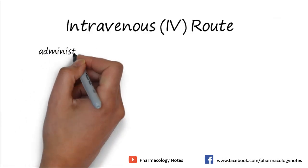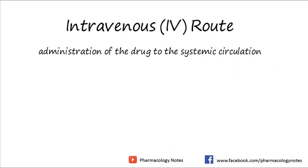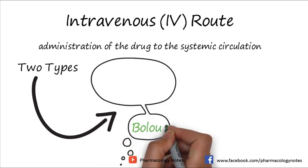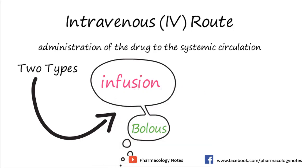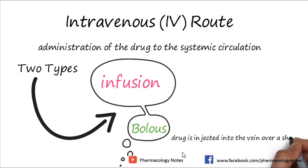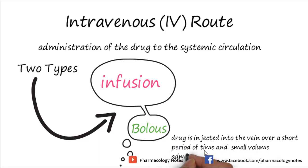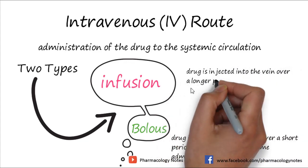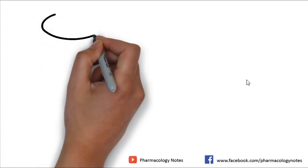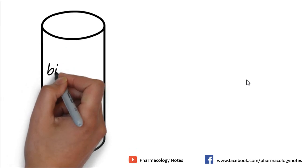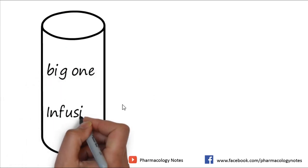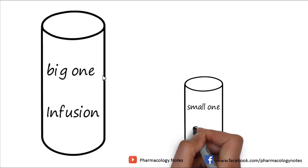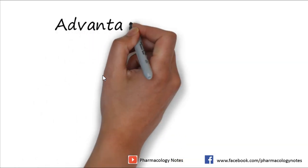Now we will discuss the intravenous route — administration of the drug into the systemic circulation directly through the vein. There are two main types: bolus and infusion. Bolus means the drug is injected into the vein over a short period of time in a small volume. Infusion means the drug is administered into the vein over a longer period of time in a larger volume. A graphical representation shows a small circle for bolus and a larger circle for infusion.